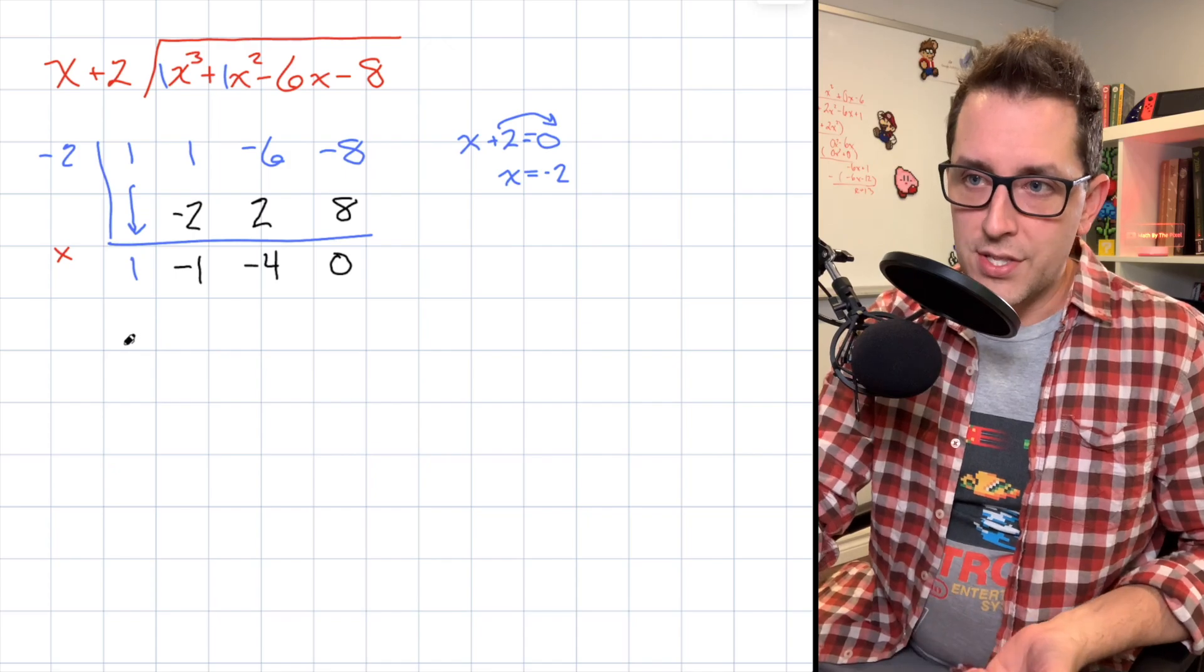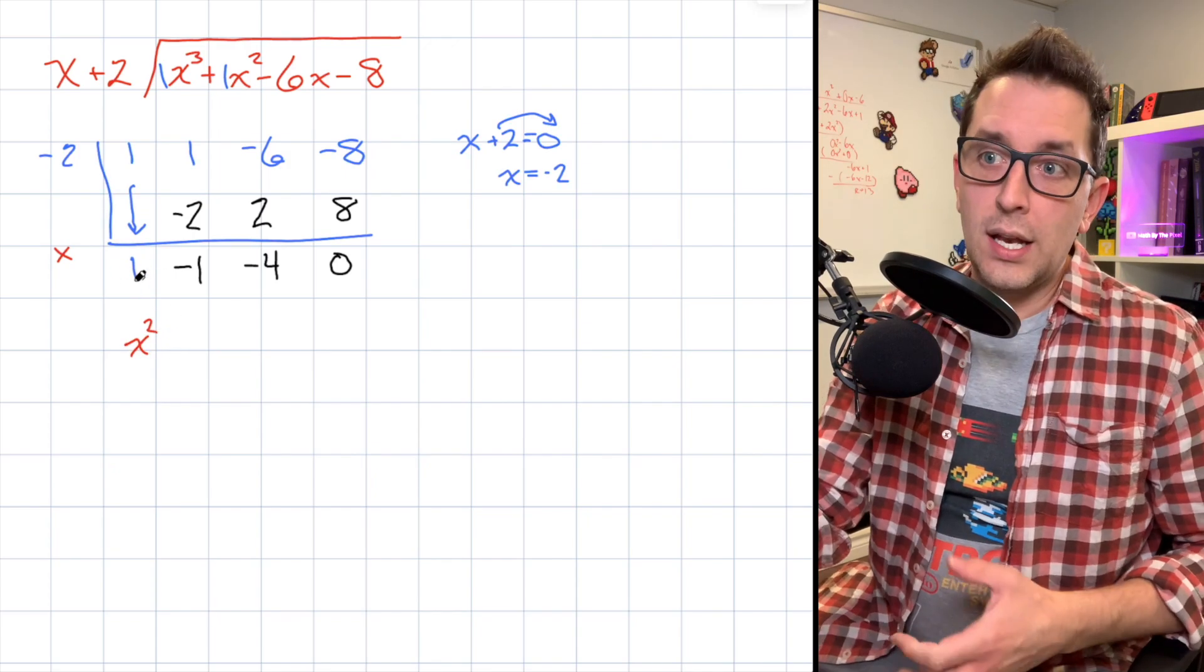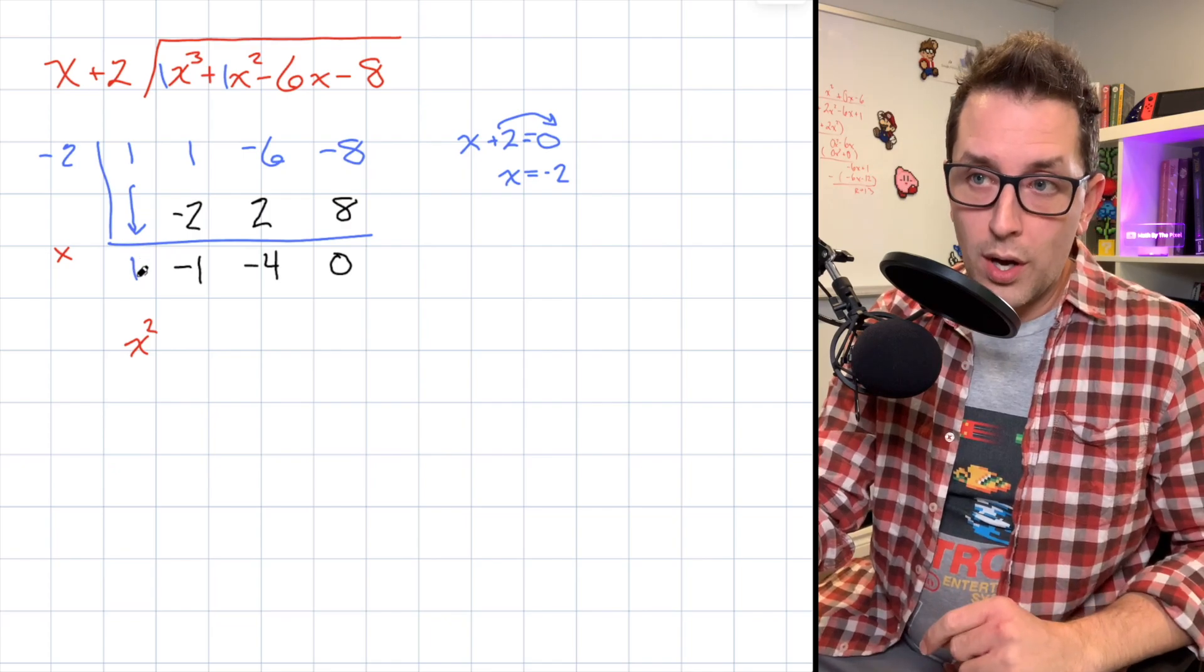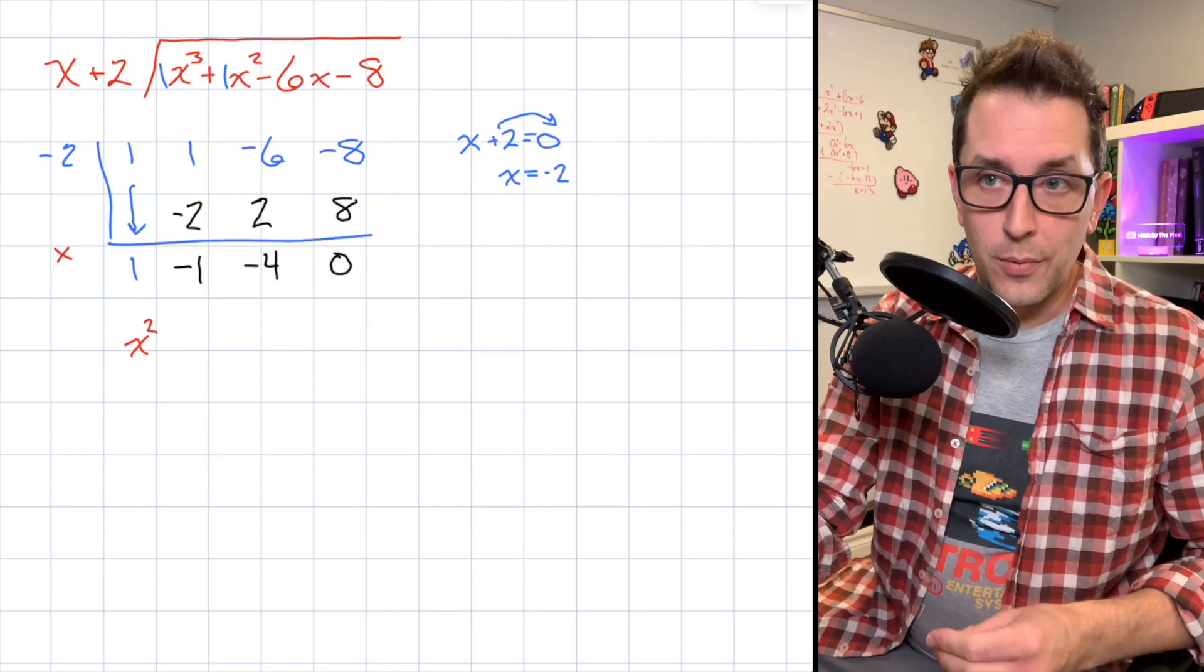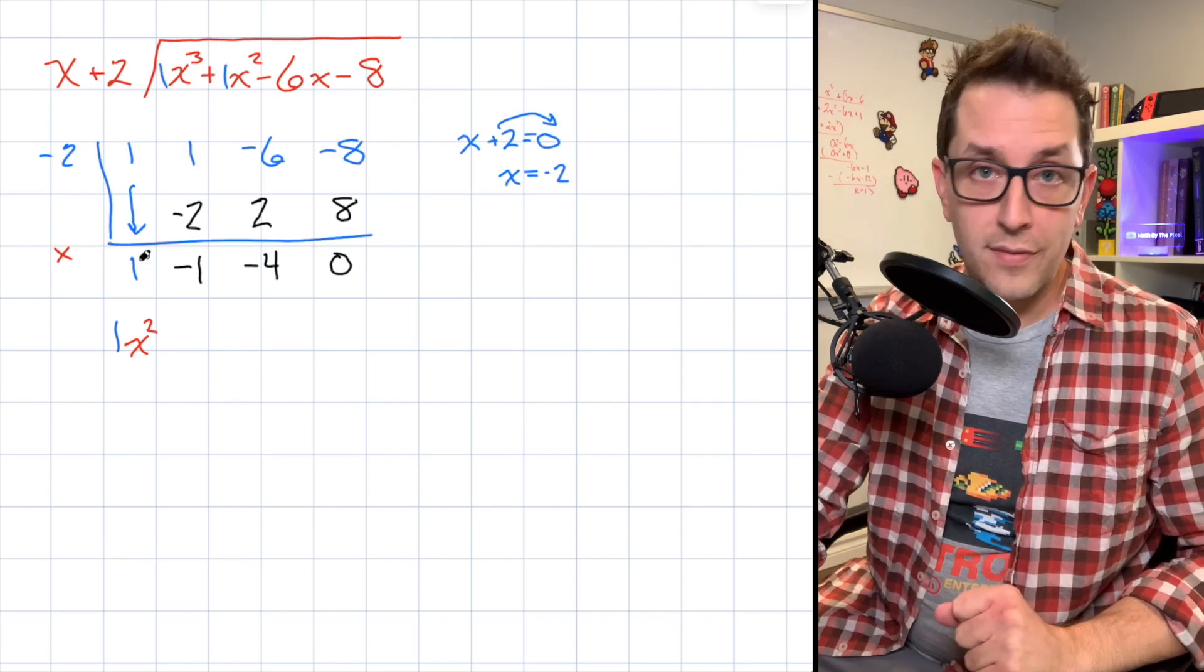So our first term in our quotient will have an x². So I'm just going to write an x² right here, right underneath my first little number here. As it turns out, that 1 is going to be the coefficient on that term. I'm just going to write it in blue so that you can see it's that same 1. So that's what I've done here.